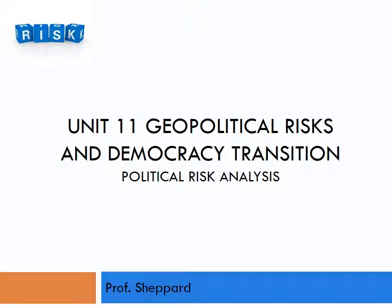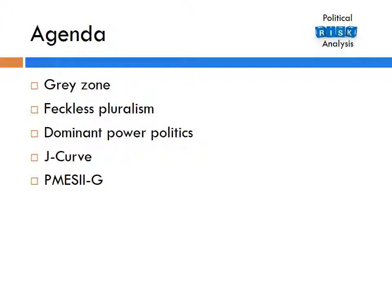Welcome to Unit 11: Geopolitical Risks and Democracy Transition. Our agenda for Unit 11 is as follows: Grey Zone, Feckless Pluralism, Dominant Power Politics, J-Curve, the Arab Spring, and PMESII-G.